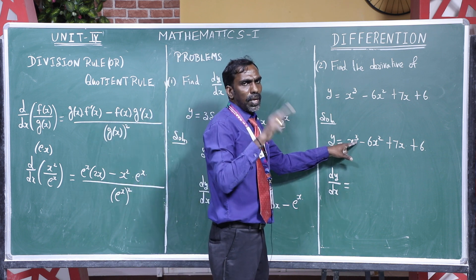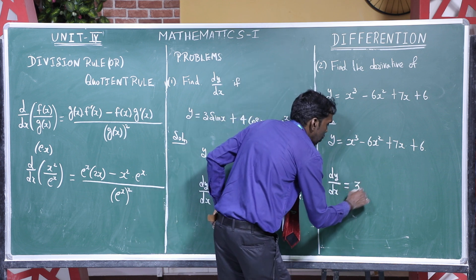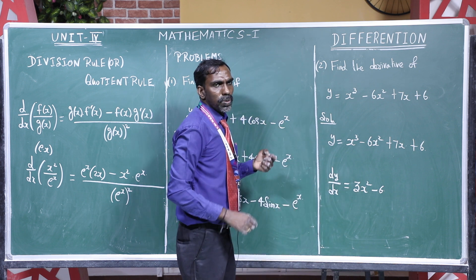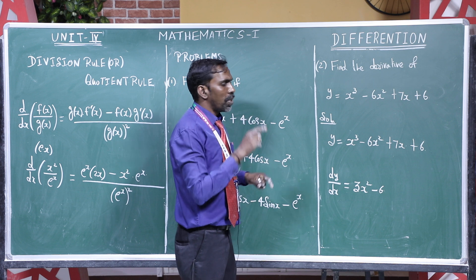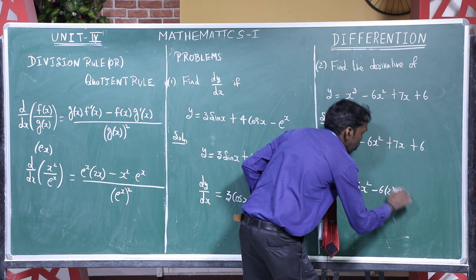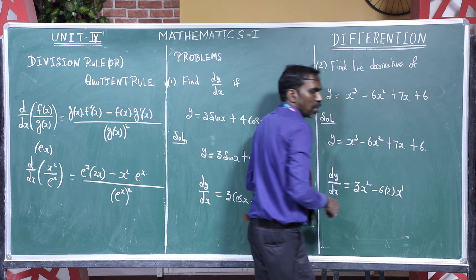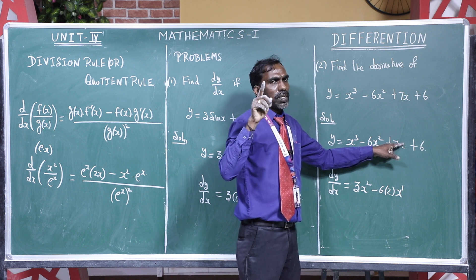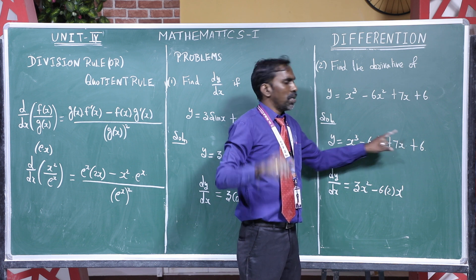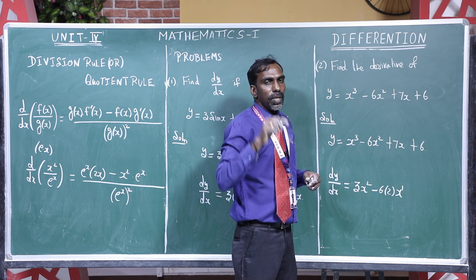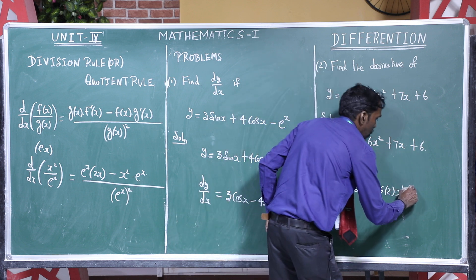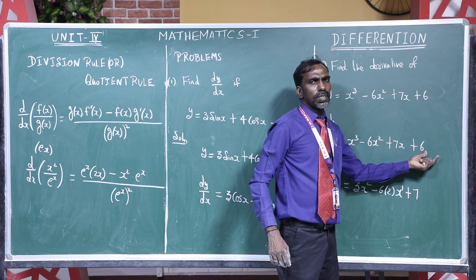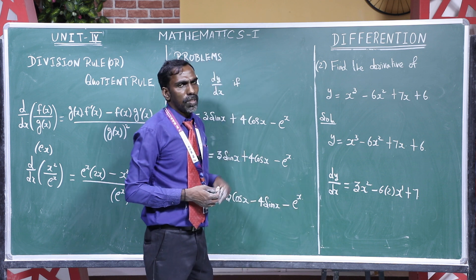Similarly for −6x², n = 2, so the derivative is 2·x^(2−1) = 2x, giving −12x. For 7x, n = 1, so derivative is 1·x^(1−1) = x⁰ = 1, giving 7·1 = 7. The differentiation of constant 6 has no x variable, and the derivative of a constant is 0.